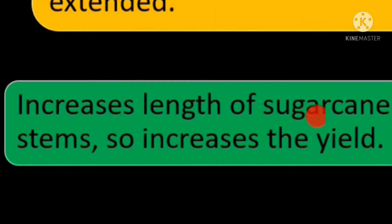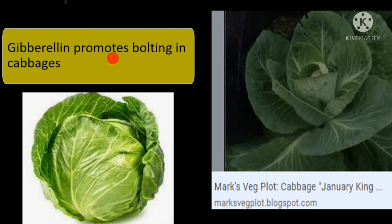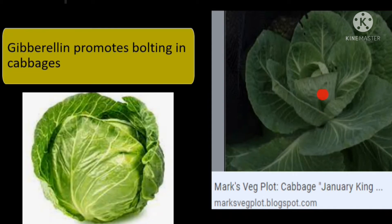Gibberellin increases the length of stems like sugarcane, so it increases the yield. Gibberellin also promotes bolting in cabbages — where a normal cabbage has its stalks in between elongated, producing a bolted cabbage.